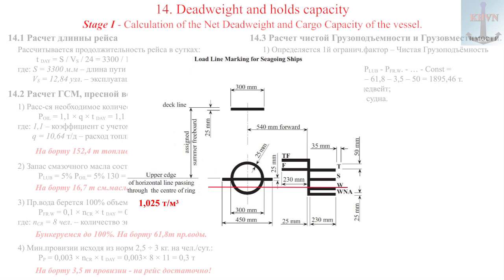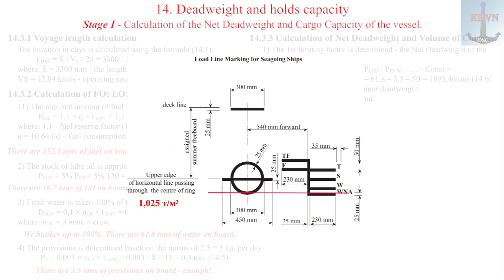Be careful in the calculations, the dead weight of the vessel varies slightly for different brands. WNA, winter North Atlantic, the lowest mark, determines the largest reserve of buoyancy, freeboard.